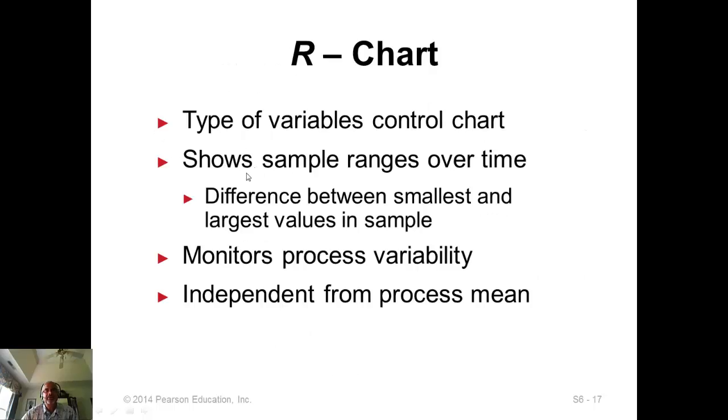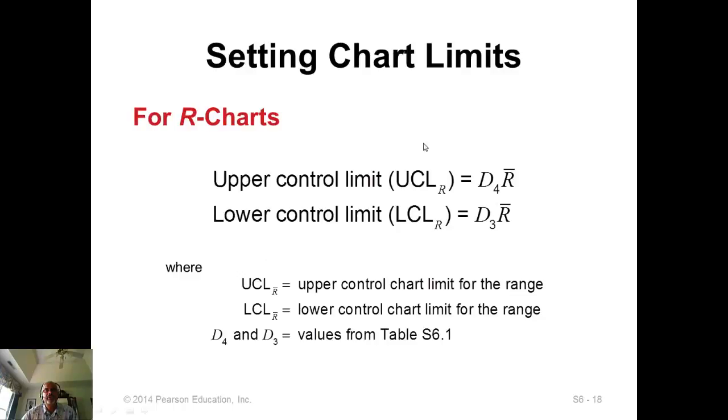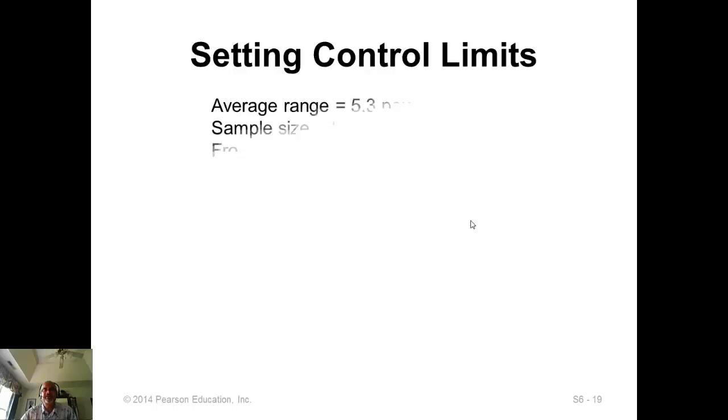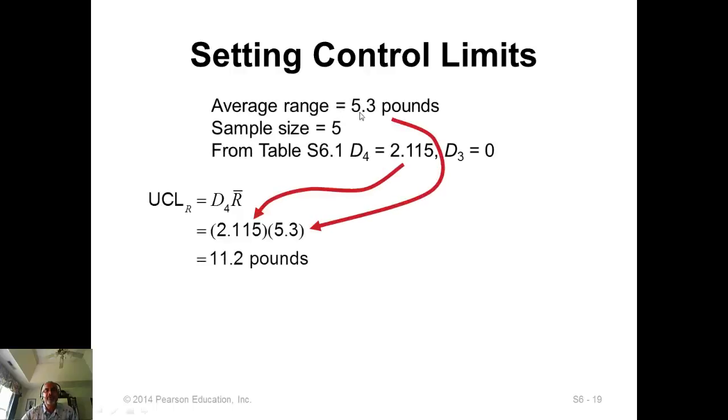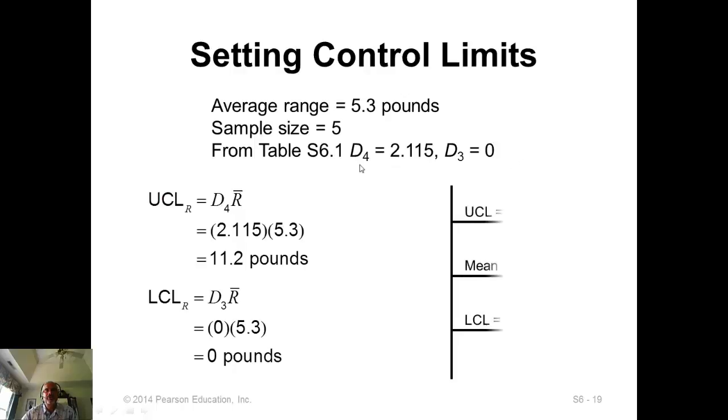R chart is computed using this formula. D sub 4 times R-bar gives you the upper control limit. D sub 3 times R-bar gives you the lower control limit. D sub 3 and D sub 4 come from table S6.1. Here average range is 5.3, sample size is 5. Then you get these two factors from the table, multiply, and you have the lower and upper control limits.